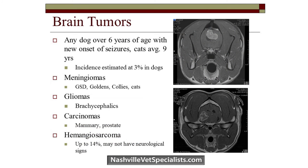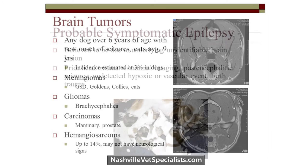Any dog over six years of age with sudden onset of seizures should have brain tumor as a differential. Dogs have a fairly high incidence of brain tumors — estimated much higher than in people. The main brain tumors are meningiomas, which tend to occur in older Labs, Goldens, and German Shepherds, and gliomas, which affect brachycephalic breeds more often at a younger age. Metastatic tumors from mammary and prostatic carcinomas and hemangiosarcomas can also reach the brain.